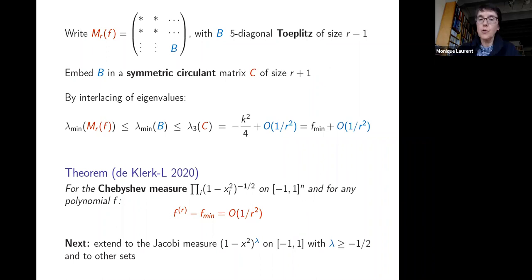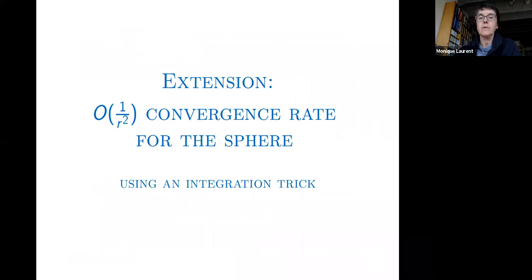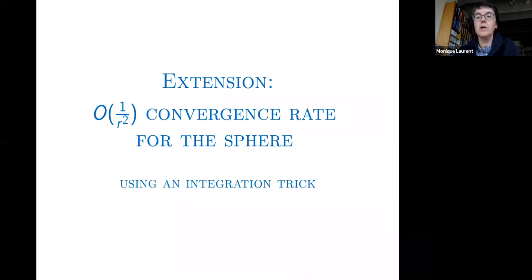For the unit sphere, the 1/r² rate is achieved via an integration trick going back to the interval case. Since we can replace f by a quadratic upper estimator, and on the sphere |x|² = 1, the estimator is actually linear. After a change of variables, it suffices to analyze minimizing the coordinate x_1 over the unit sphere.